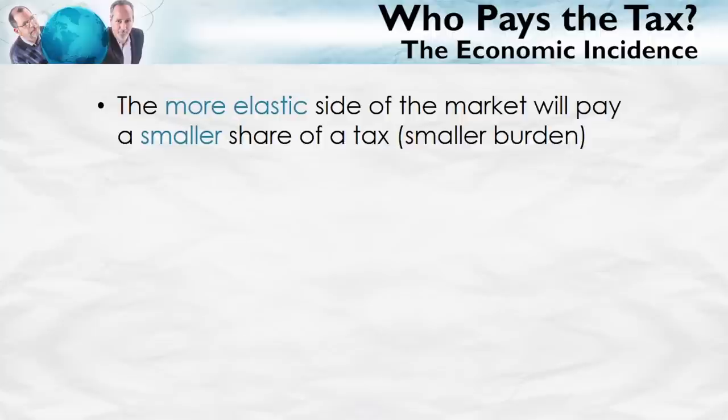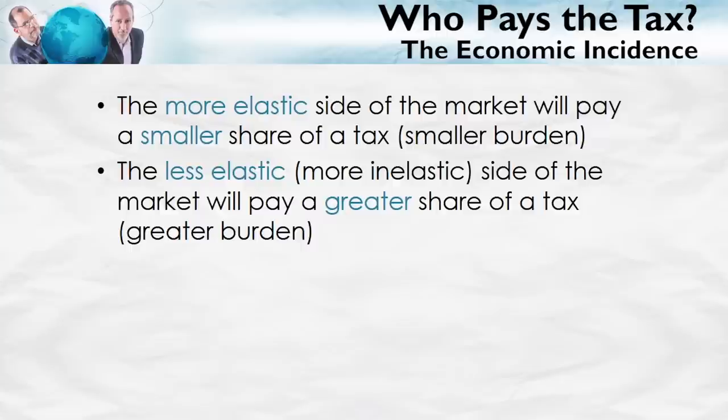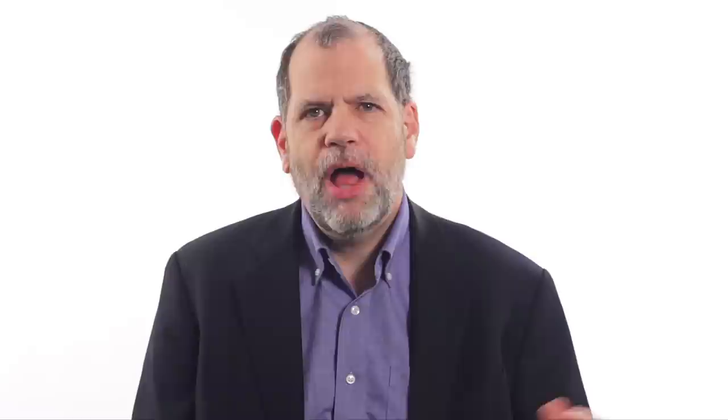Here's the rule for the economic incidence of a tax. The more elastic side of the market will pay a smaller share of the tax — a smaller burden. Similarly, the more inelastic side of the market will pay a greater share of the tax. So, more elastic pays a smaller share; less elastic pays a greater share. I'm going to show you this in a couple of diagrams, and then give you the intuition for why it's the case.